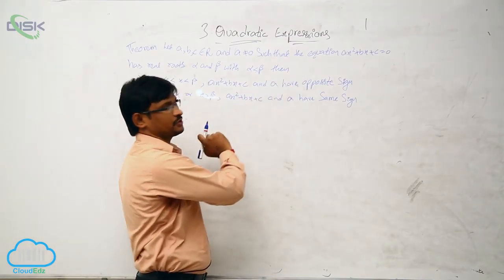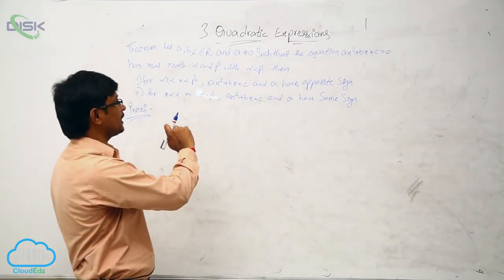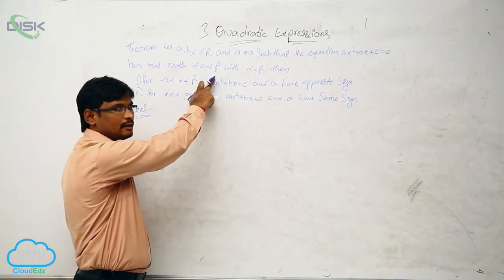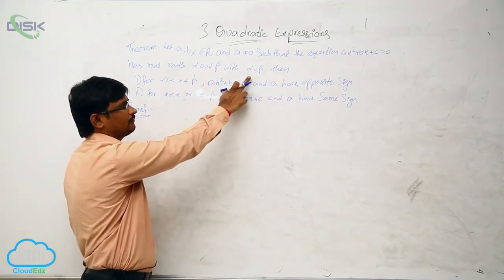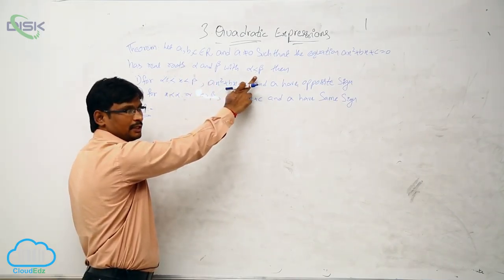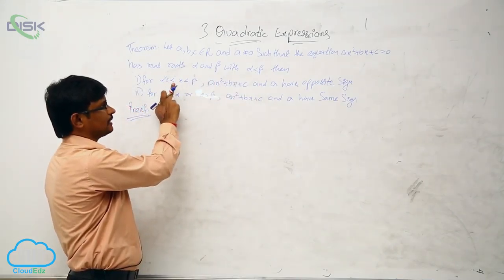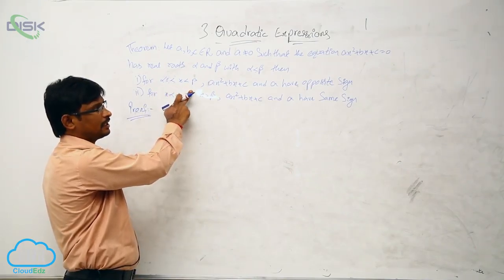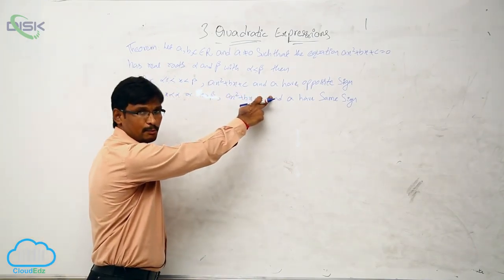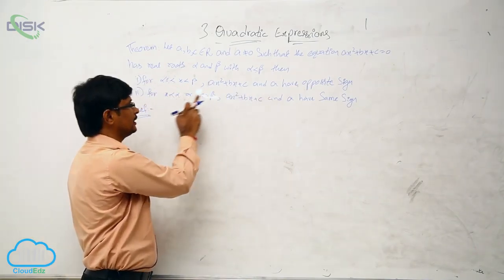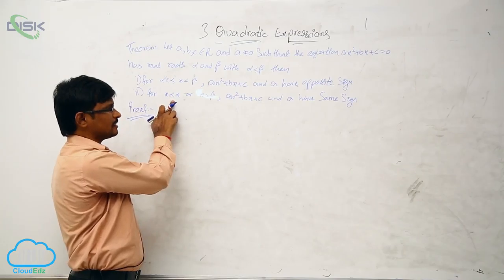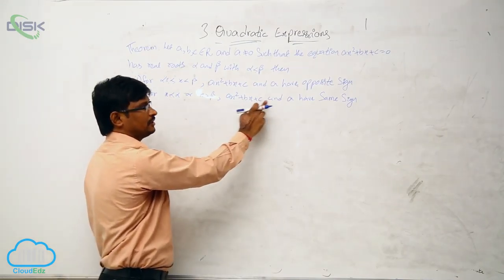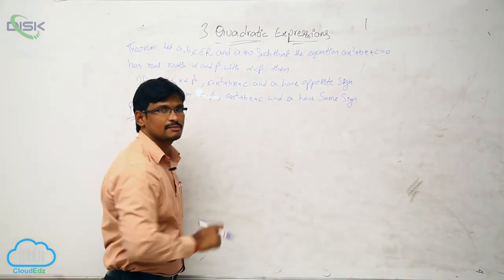If the quadratic equation has two roots, let the roots be alpha and beta such that alpha is less than beta. Then if x lies between alpha and beta, we have to show that the quadratic expression and a have opposite sign. If x is less than alpha or x is greater than beta, we have to show that they have the same sign.